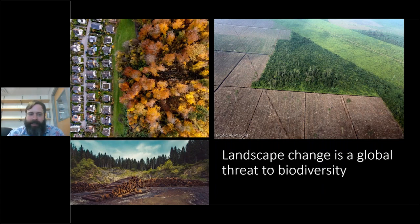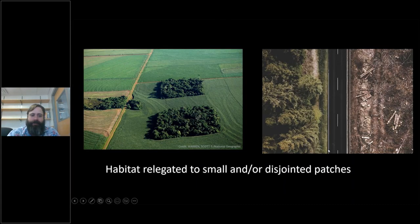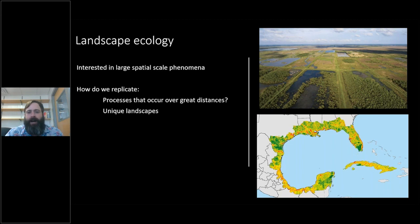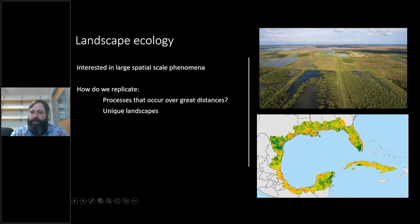Landscape change is one of the primary threats to biodiversity worldwide. What this means is the remaining habitat has been relegated to small or disjointed patches. You can have forests surrounded by agriculture, or a forest separated by a road and deforestation. Landscape ecology is interested in phenomena happening at very large spatial scales, but the difficulty is how do we replicate processes occurring over great distances — for example, a species distributed from Florida all the way down into Central America and across the Caribbean.